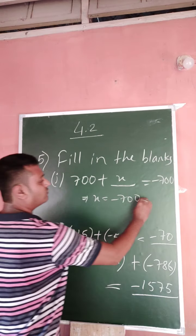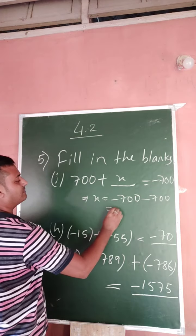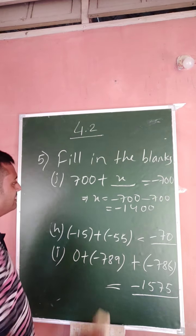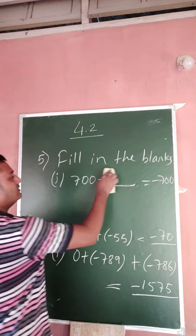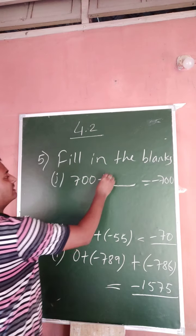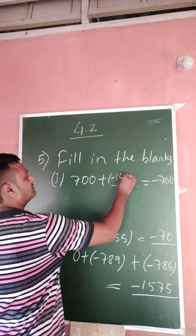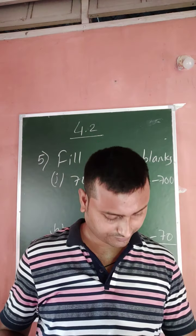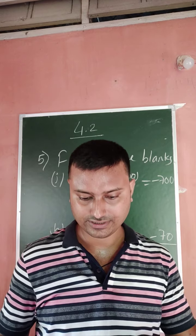So this one is positive and goes to that side becomes negative. That is minus 1400. That means if you add 700 with minus 1400 then you will get minus 700. So minus 1400. Question 5 has been finished.